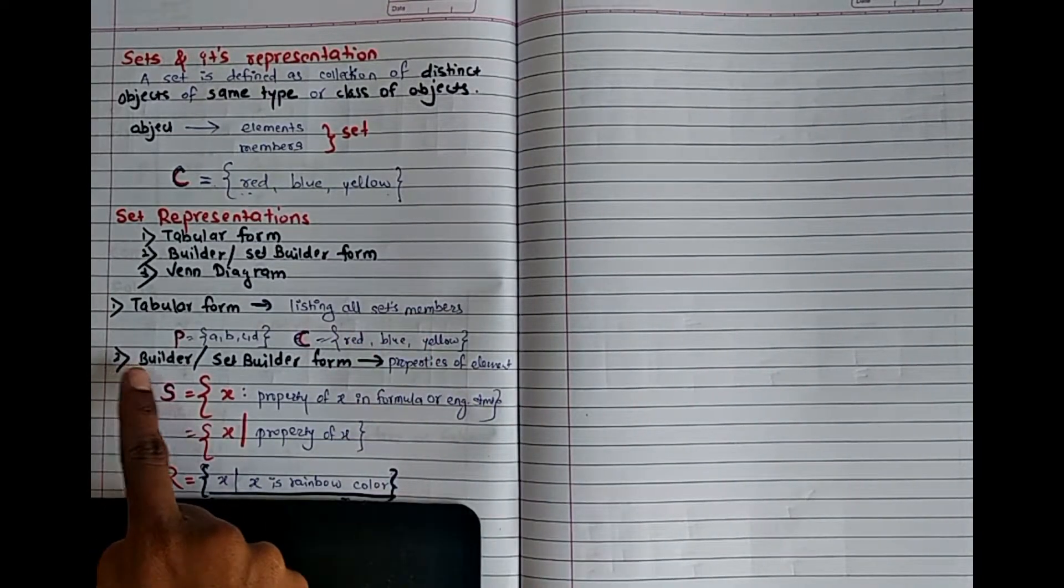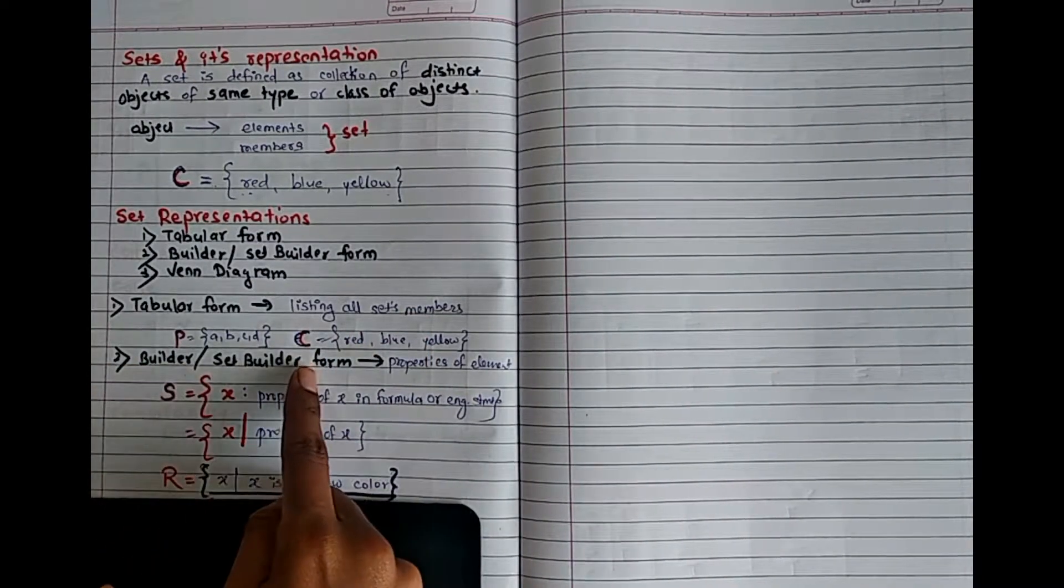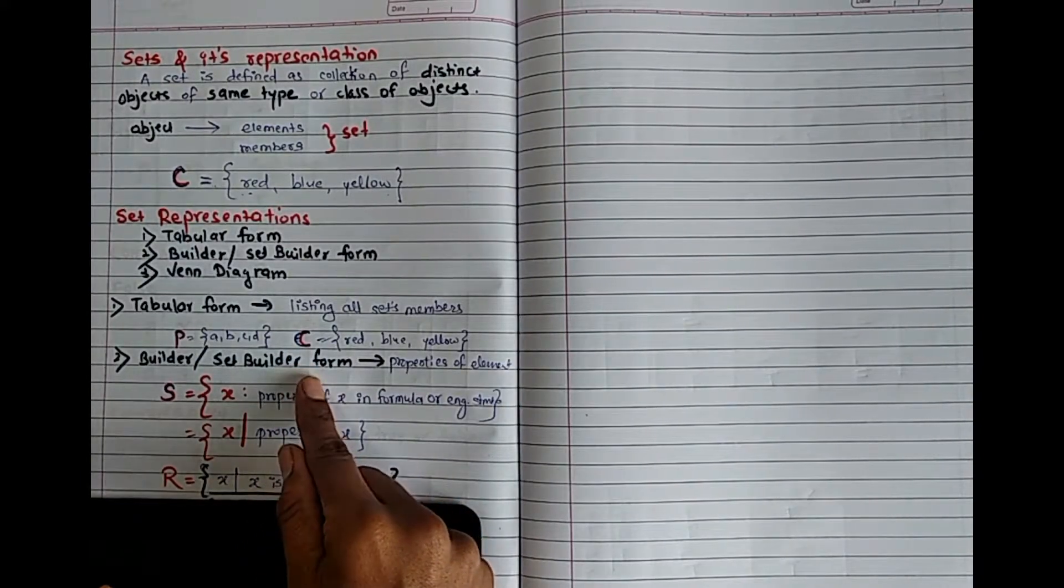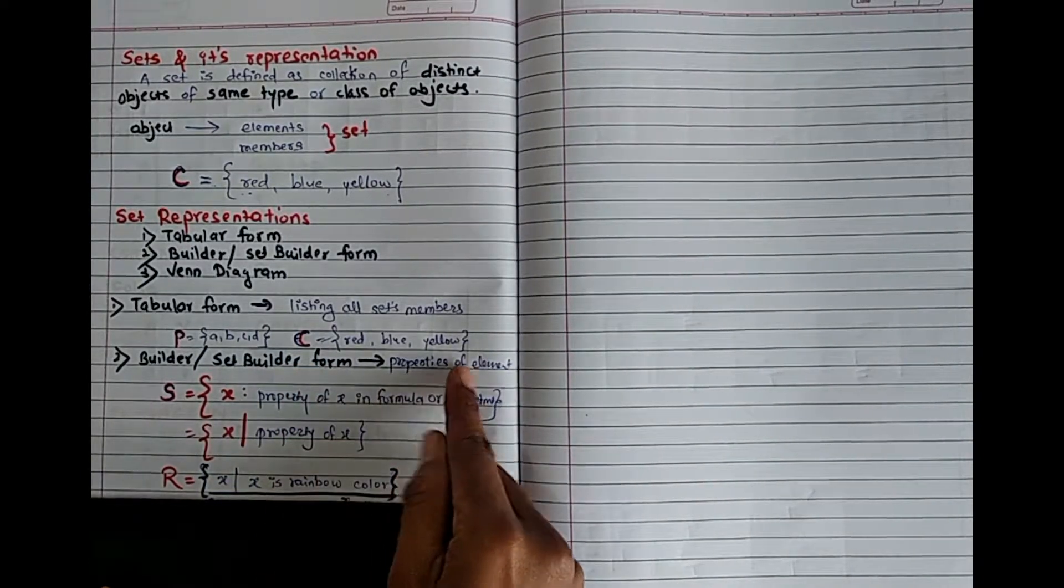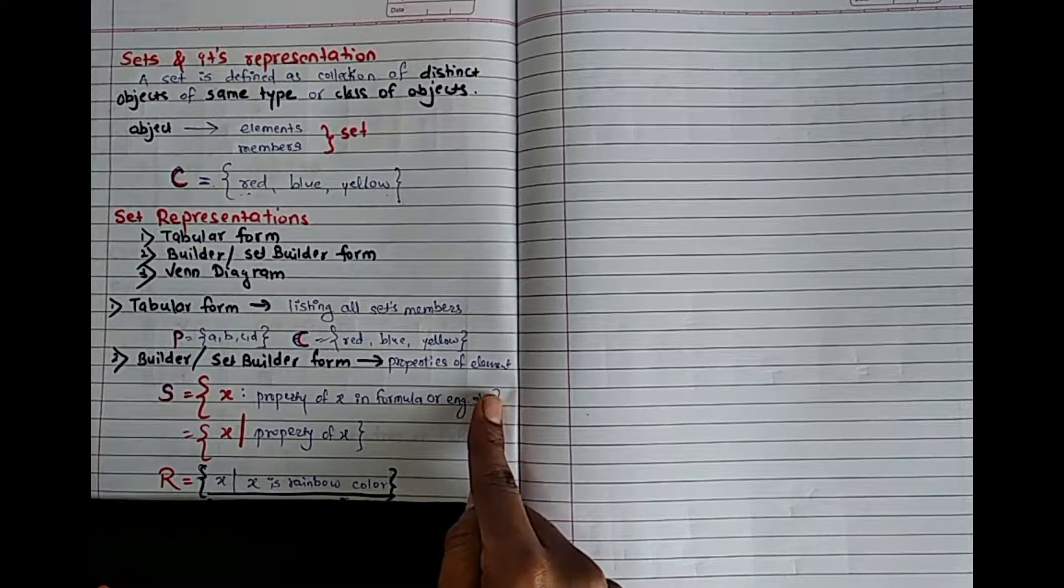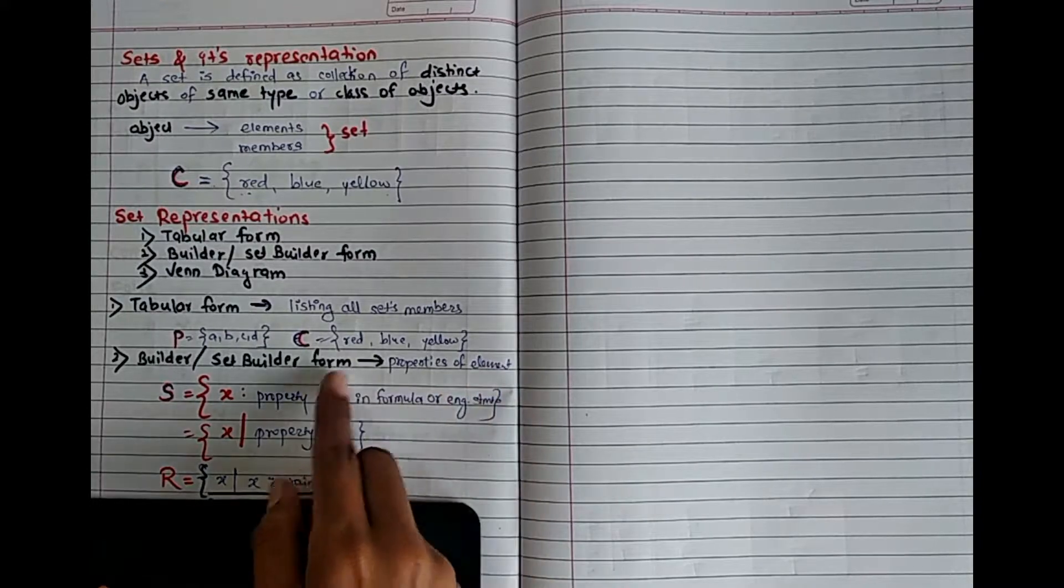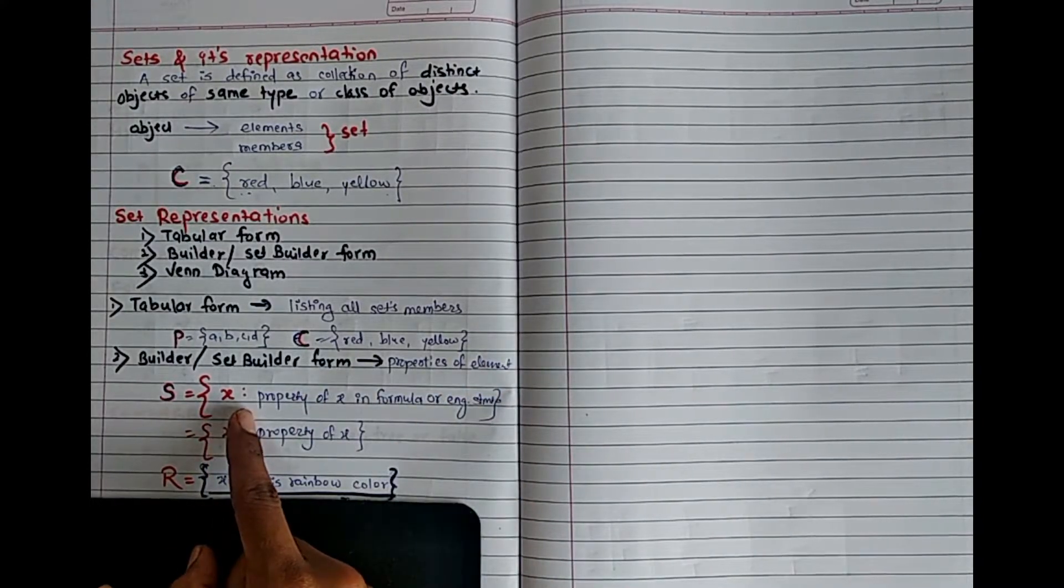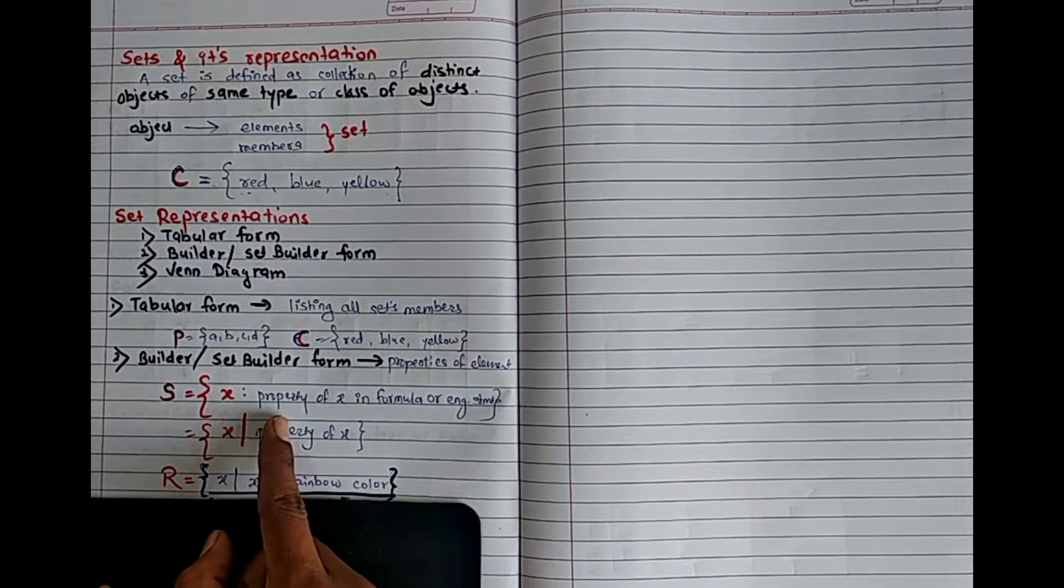Next representation is set builder or builder form. What you do, you represent the properties of set element and you define a set by using its property with its element. Now the set element is not directly written.